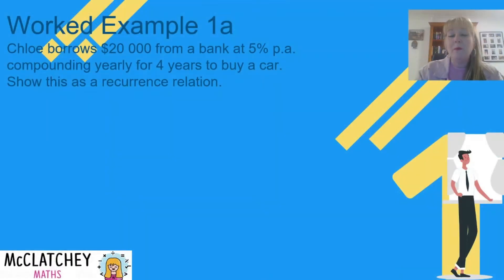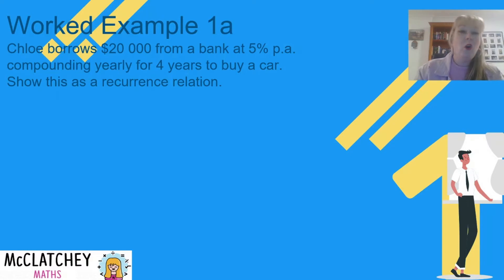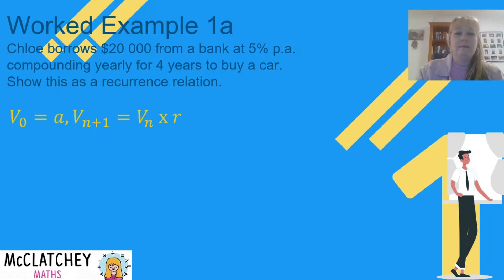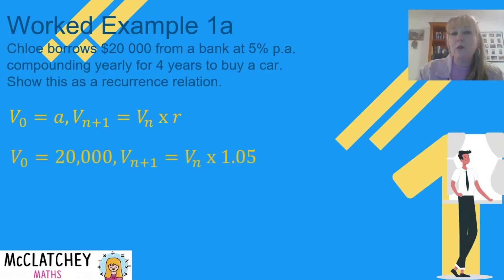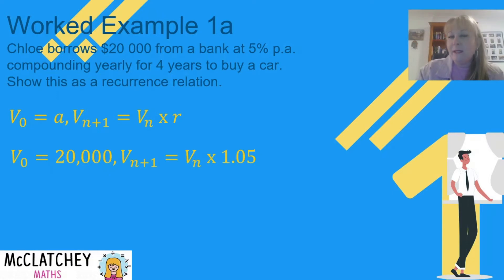Let's do that in a worked example. Chloe borrows $20,000 from the bank at 5% per annum, compounding yearly for four years to buy a car. We need to write this as a recurrence relation. The principal is $20,000, so V0 equals 20,000. To find the next term, we multiply the previous term by R, which is 1.05. That's because 5% as a decimal is 0.05, and we add 1 to get R, giving us 1.05.